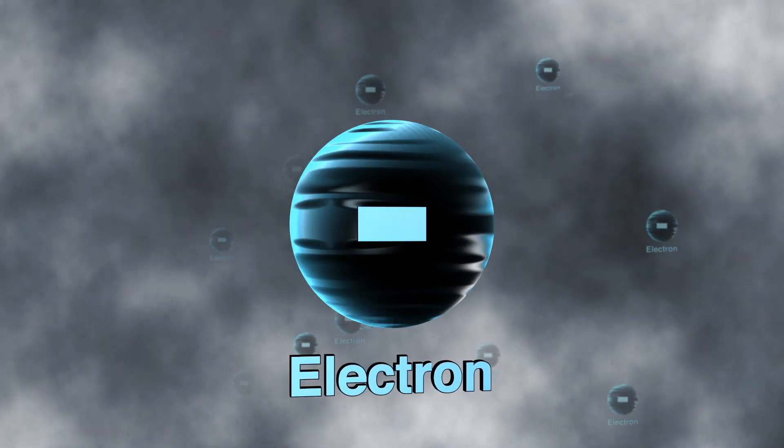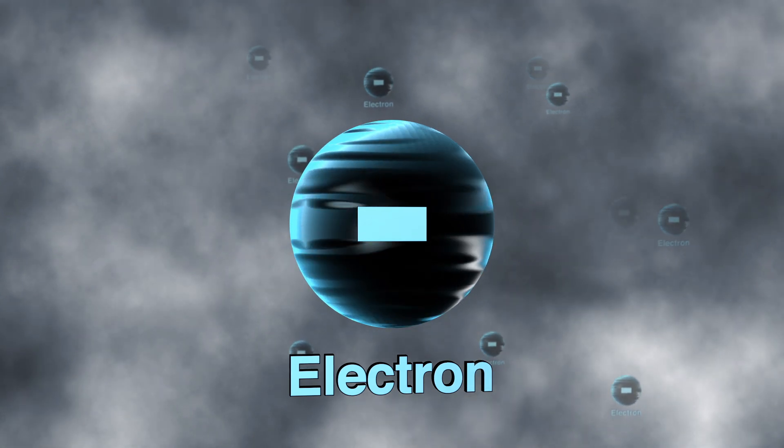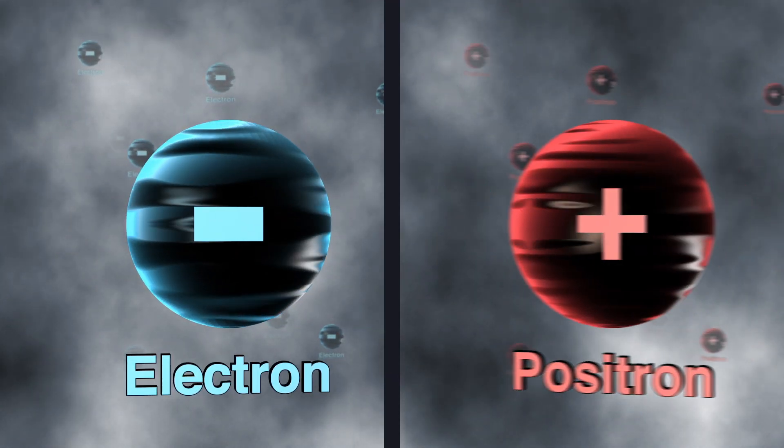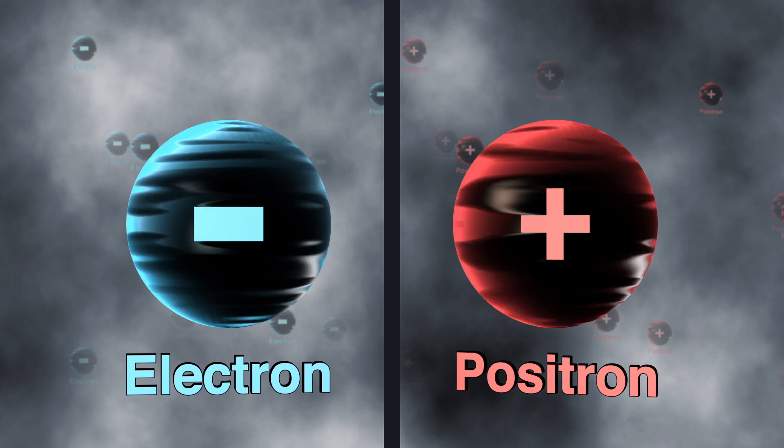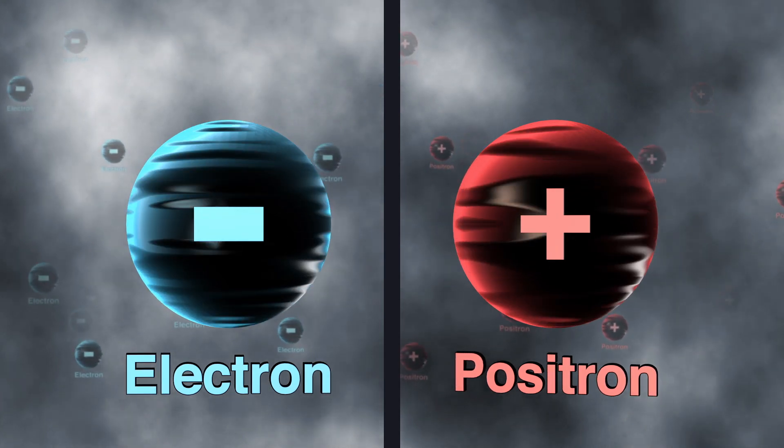Consider, for example, the electron. It has a very small mass and negative electric charge. Its antiparticle, the positron, has exactly the same mass but a positive electric charge.